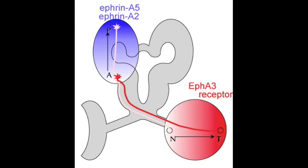Gradients of repellents Ephrin A2 and A5 across the optic tectum organize topographically patterned ingrowth of retinal axons, whose growth cones bear graded levels of EphA receptors.